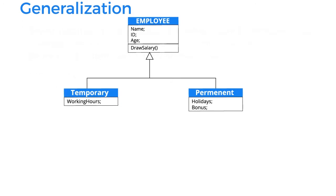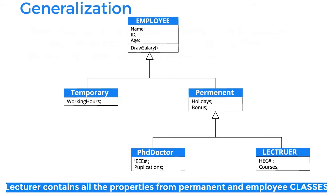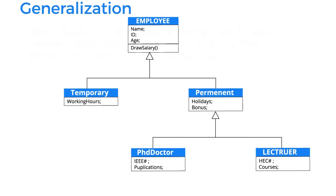Temporary workers do not contain holidays or bonus. Permanent workers not only contain holidays and bonus, but also inherit the properties of name, ID, age, and raw salary from the superclass. The permanent worker is further divided into two parts: lecturer and PhD doctor, both having different properties. Lecturer contains HEC number and courses taught; PhD doctor contains IEEE number and publications. The lecturer's superclass is permanent, and permanent's superclass is employee, so lecturer also inherits holidays, bonus, name, ID, age, and raw salary.